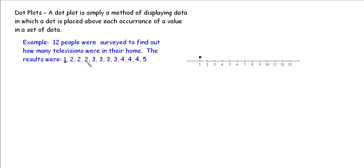We had 1, we have a 2, we have another 2, so we place a second dot above the 2, we have a third 2, and we continue on in this fashion until we've represented every value in the data set on our dot plot.